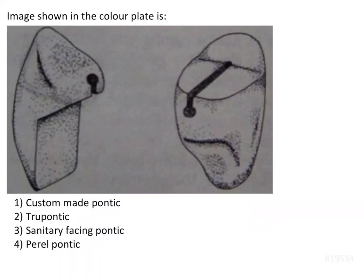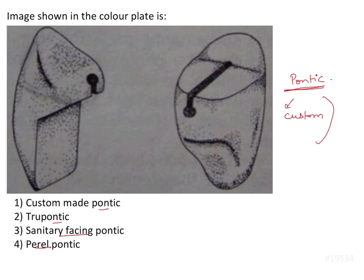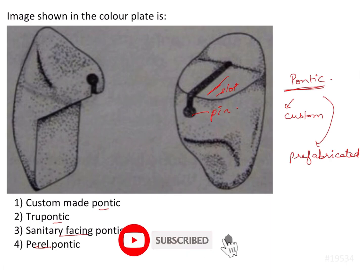The image shown in the plate is a custom-made pontic, true pontic, sanitary facing pontic, or peril pontic. A pontic is that part of the FPD that replaces the missing tooth. It could be either custom-made or prefabricated. Since this pontic is already fabricated — it has a slot and a pin — custom-made is eliminated from the options.